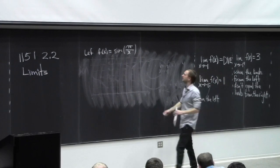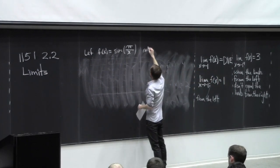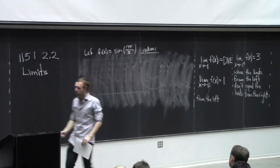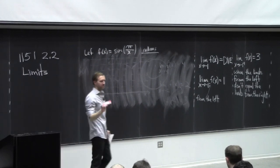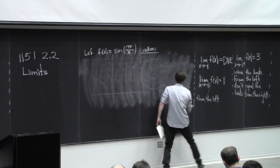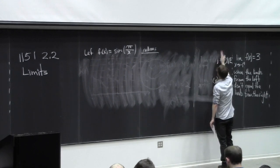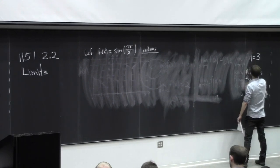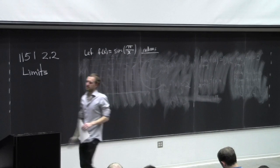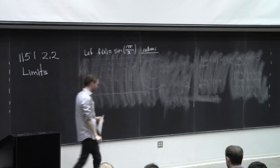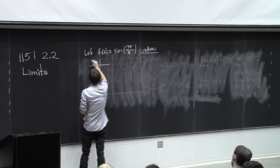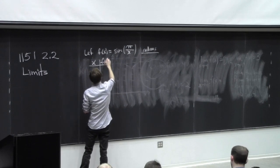You have to set your calculators to radians — we're going to be working in radians. Cool people use radians. So get ready to evaluate this function. I want to fill out a table: here's x and here's f of x. What I'm going to do is x equals 0.d, 0.0d, 0.00d, 0.000d — and I want d to equal 1, 3, and 7.